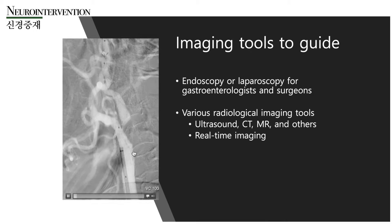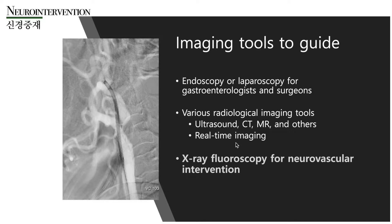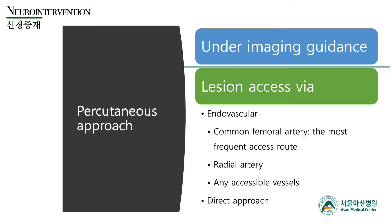This is typical fluoroscopic imaging, which we use for various interventional procedures under x-ray fluoroscopy. As gastroenterologists use endoscopy or surgeons use laparoscopy for their procedures, we use various real-time imaging tools, especially x-ray fluoroscopy, for neurovascular intervention. Under imaging guidance, various percutaneous approaches can be done. For the endovascular approach, the most preferred route is the common femoral artery. Sometimes we use a radial artery as an alternative, but any accessible vessel can be chosen for vascular access.